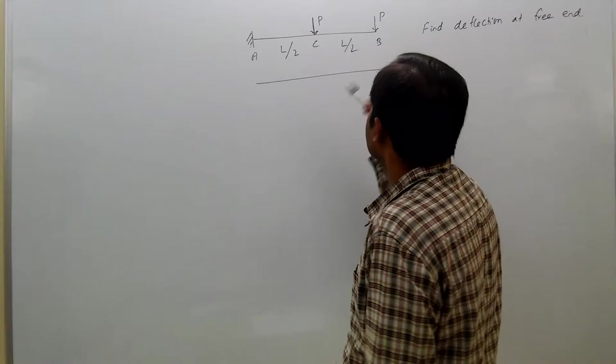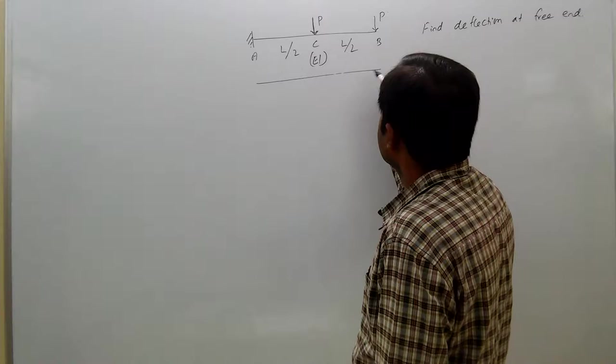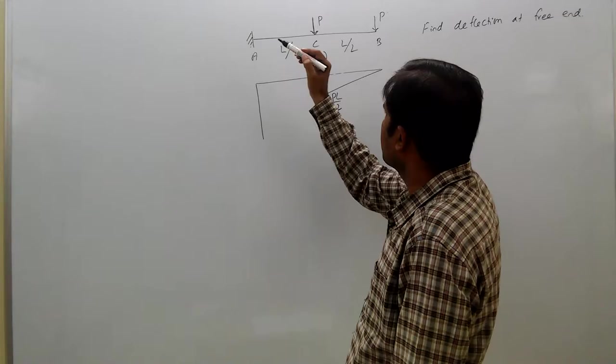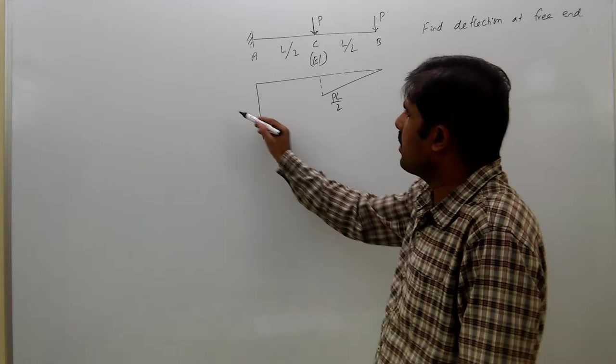Now first we will draw the bending moment diagram. Take A as its flexural rigidity, first draw bending moment diagram. So P into L/2 here, then at the fixed end bending moment is P into L plus P into L/2, which equals 3/2 PL.